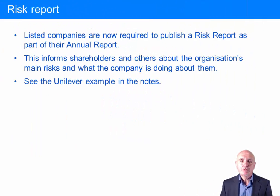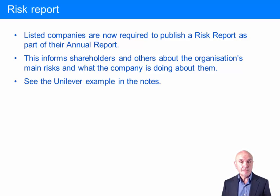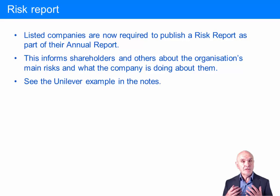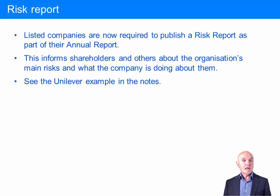UK listed companies are now required to publish a risk report as part of their annual report — alongside the chairman's statement, directors' report, and financial statements. The purpose is to inform shareholders and others about the organisation's main risks that have been identified and what the organisation is doing about them. This gives shareholders confidence that the organisation is taking risk seriously and also makes directors focus on their risk management activities.